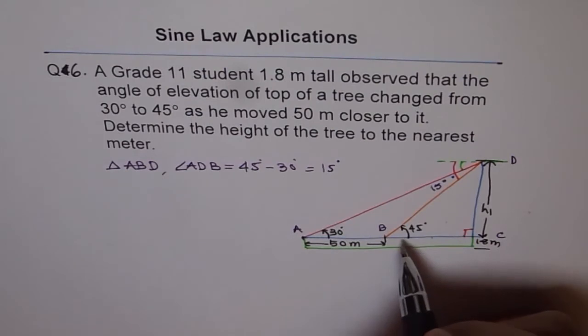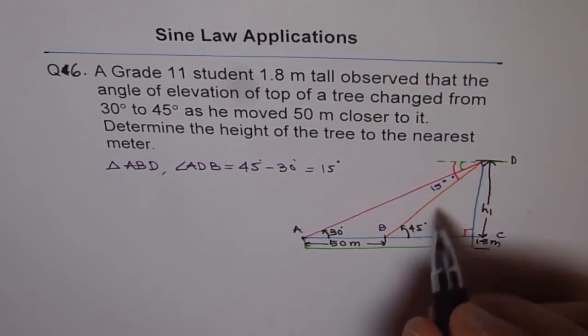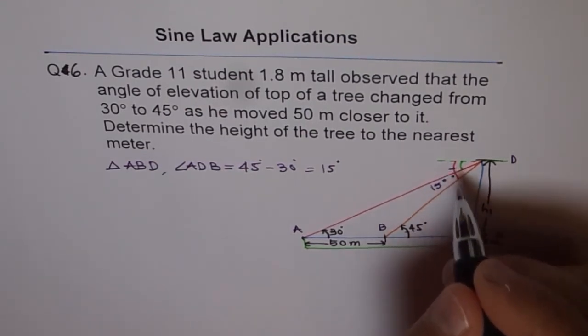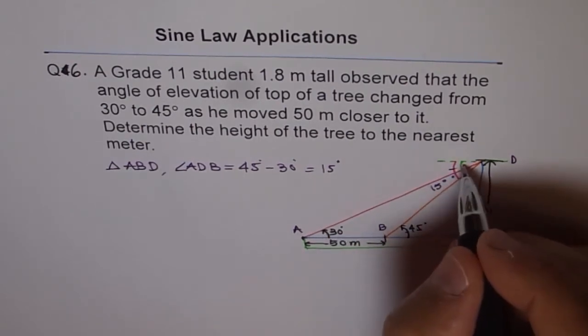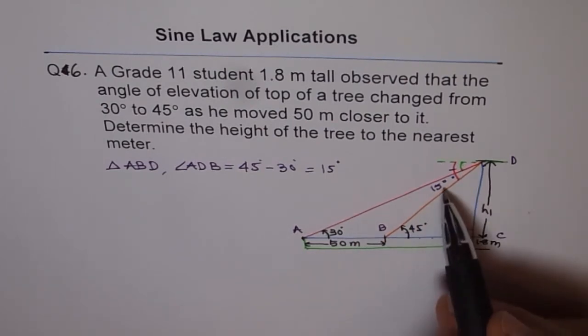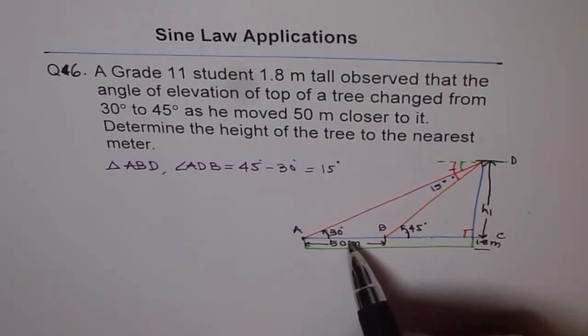And why is it 45 minus 30? Because these two lines are parallel and these are alternate angles. That is why these are alternate angles. So this angle is equal to this angle. So this angle is equal to 30 for this green. So we get 15 degrees. Now in this triangle, we know an angle and side opposite to it. So we can apply sine law. That's the critical thing.